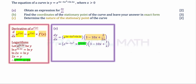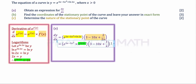Let e to the power of ln 2x equal y. Taking ln of both sides gives ln of e to the power of ln 2x equals ln y. Using the power law, ln 2x shifts to the front: ln 2x multiplied by ln e, and since ln e equals 1, the left-hand side simplifies to ln 2x equals ln y. Removing the ln's, 2x equals y. So e to the power of ln 2x simplifies to just 2x.